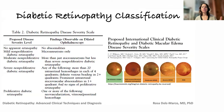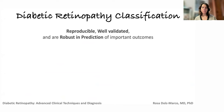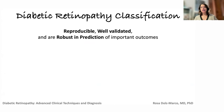In daily practice, we categorize as non-proliferative with mild, moderate, or severe degree, or proliferative — and based on that, we manage patients accordingly. Both classifications are reproducible, well-validated, and robust for predicting important outcomes. The ETDRS is more used in clinical trials, while the international classification is used in real-life clinic.